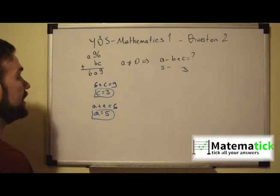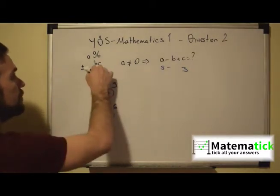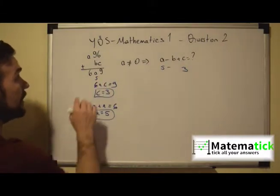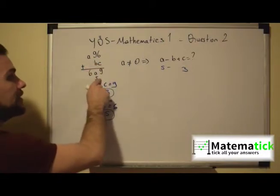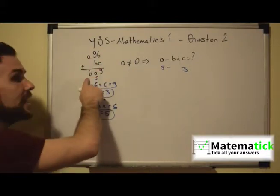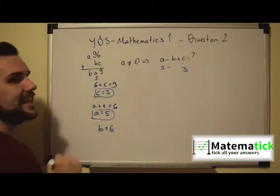If A is equal to 5 it means 9 plus B should give us 5. So what is the number? It's going to be 9 plus 6 which will give us 15. So we write 5 and we have one remainder. So 1 plus 5 will give us 6. So B in this case should be equal to 6.